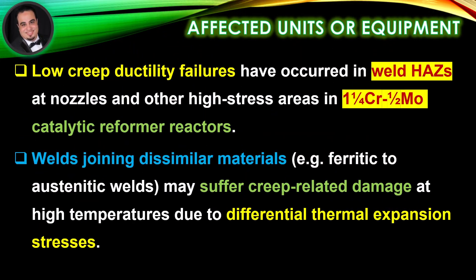Low creep ductility failures have occurred in weld heat affected zones at nozzles and other high stress areas in 1-1/4 chromium 1-1/2 molybdenum catalytic reformer reactors. Welds joining dissimilar materials, such as ferritic to austenitic welds, may suffer creep-related damage at high temperatures due to differential thermal expansion stresses.